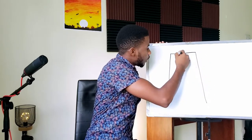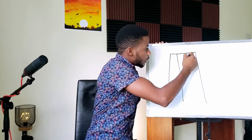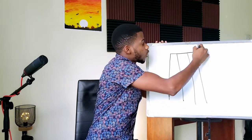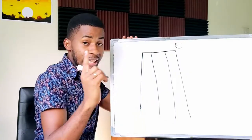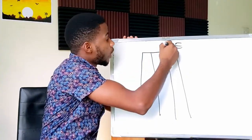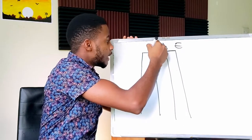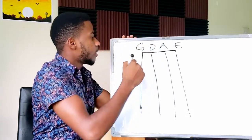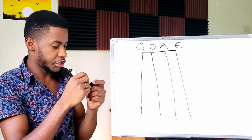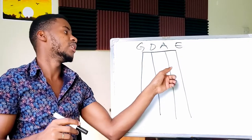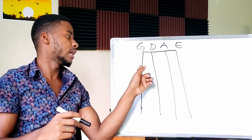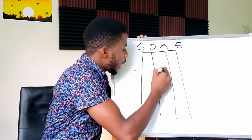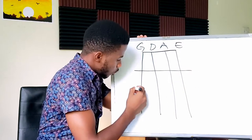Let's say this is the neck of our violin with four strings on it. The first string, the tiniest one, is called E. The next one is A as the second string, then D as the third, and G as the fourth. So they go from smallest to biggest.